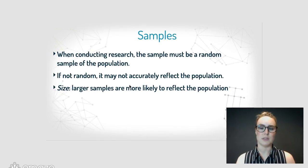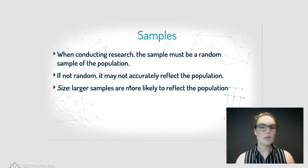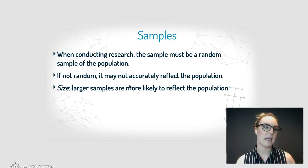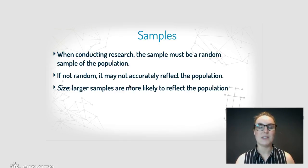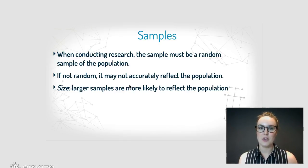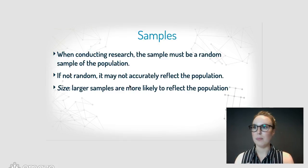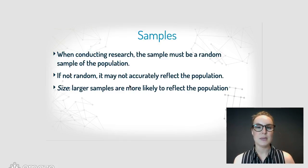When you're conducting research, the sample has to be a random sample of the population. So if we were doing all teens in Adelaide, I couldn't just go to the top school in the state, pick the 10 top students from that school, and say that's my sample for all teens in Adelaide. That's not random; it doesn't reflect the entire population. If we were researching something about academic success, you're only getting the cream of the crop — a very particular type of person. You need to make sure that you are randomly sampling from the population.